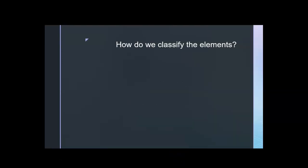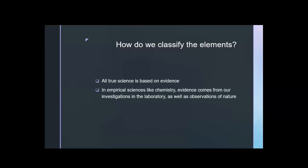How do we classify the elements? All true science is based on evidence. In empirical sciences, like chemistry, our evidence comes from our investigations in the lab, as well as our observations from nature. Elements are classified into three categories based on their physical and chemical properties.